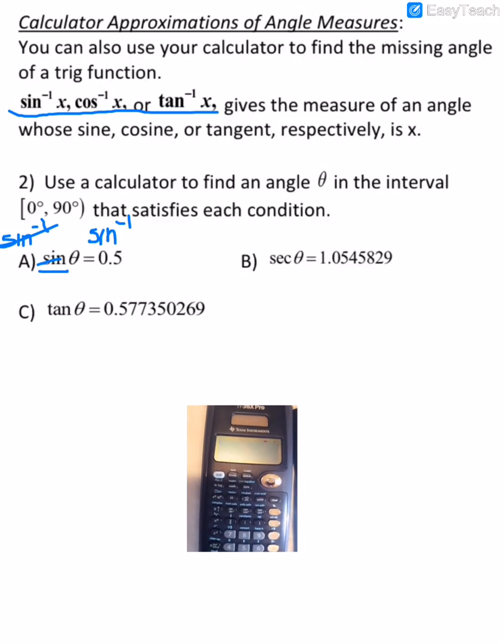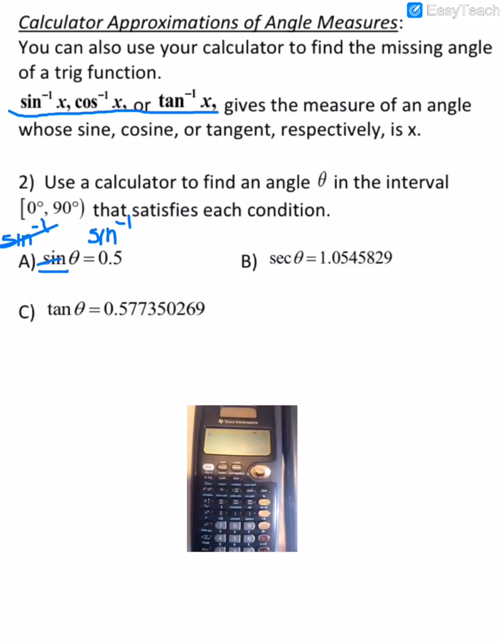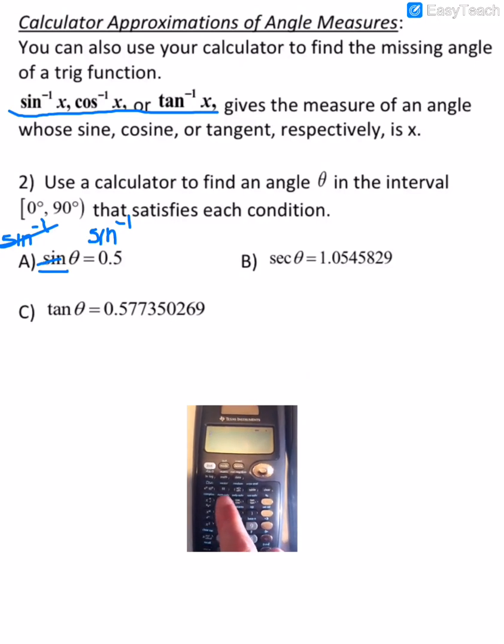Okay, so these cancel out, and so the angle is going to be the sine inverse of 0.5. Okay, so if you'll notice, on the same button for sine, it has sine inverse. We just have to press it twice, and then that gets us to sine inverse.